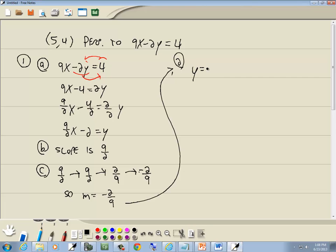Step 2: Plug in the given point for x and y, and the m we just found into y = mx + b, and solve for b.